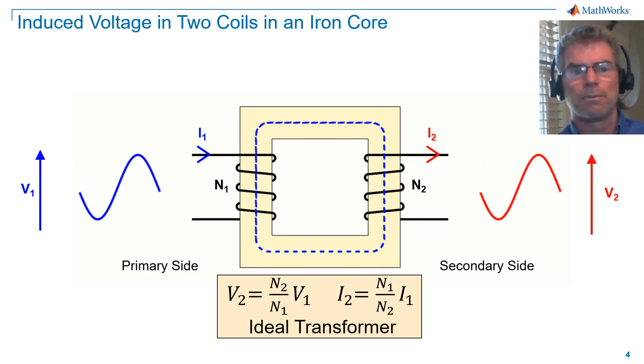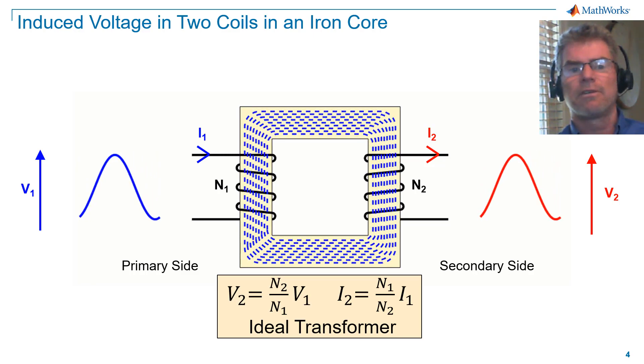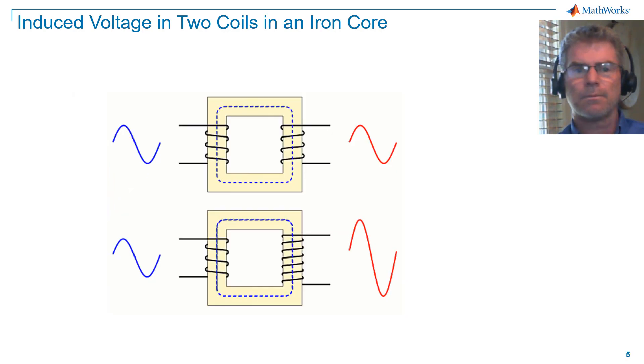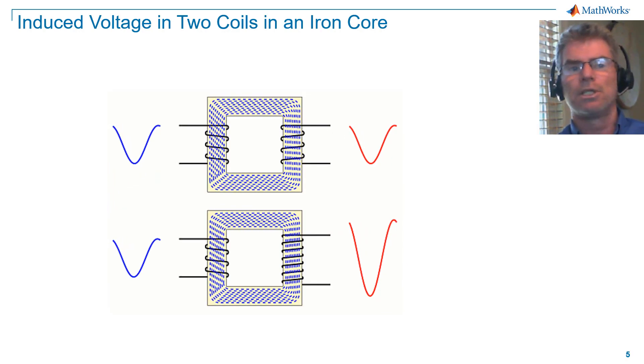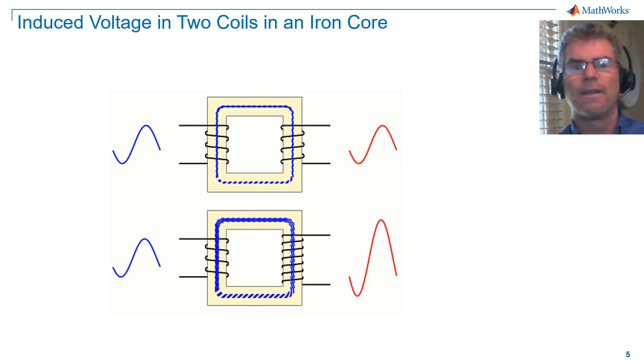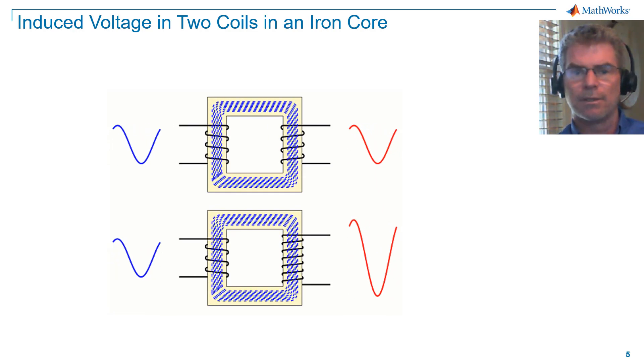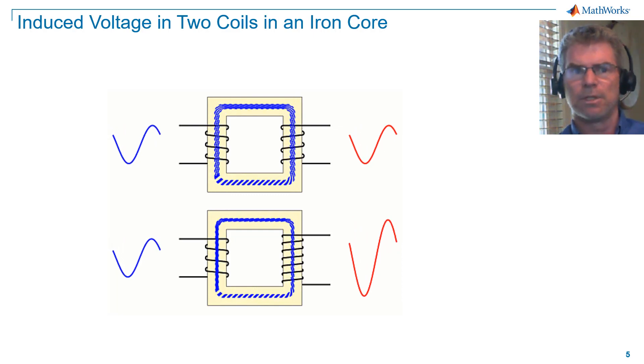The ideal transformer equations allow perfect transfer of power from the primary side to the secondary side. If we increase the turns ratio, N2 over N1, then we see a corresponding increase in the secondary voltage magnitude relative to the primary voltage magnitude.